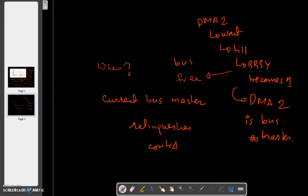DMA 2 is the next bus master. Now DMA 2 is the next bus master. Once DMA 2 becomes the bus master and starts transferring, BBSY signal becomes zero.